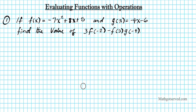So what is this question asking us to do? It's asking us to plug in negative 2 into f, triple it, and then subtract the product of what you get when you plug in 3 into f multiplied by what you get when you plug in negative 4 into g. To make this easy, we're going to evaluate each function piece by piece and then put everything back into the expression to find out what its value is.